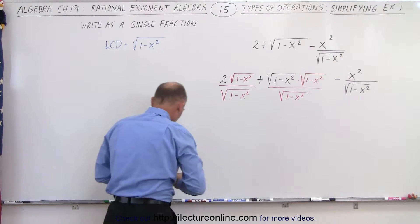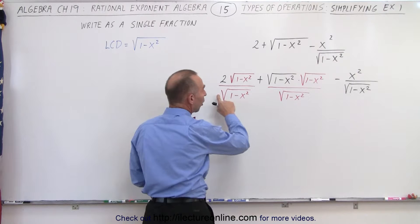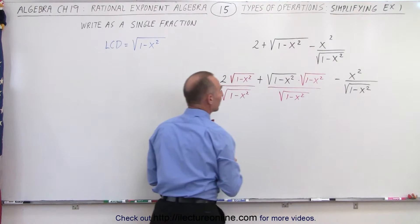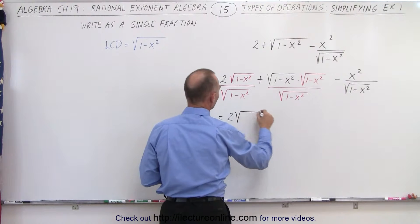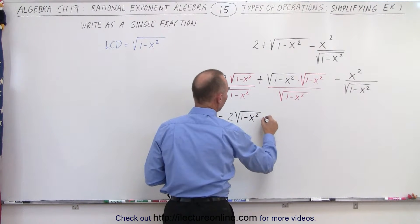All right, once I've done that, notice that I can now write all of these over the same common denominator. So this becomes equal to 2 times the square root of 1 minus x squared, plus,